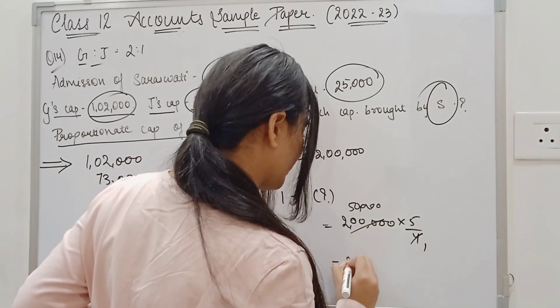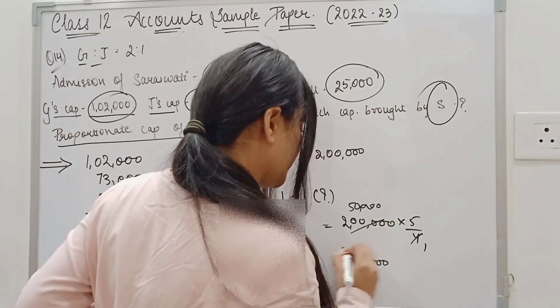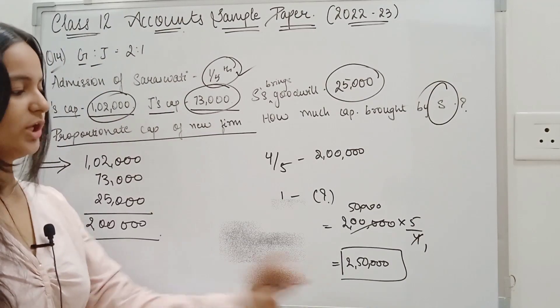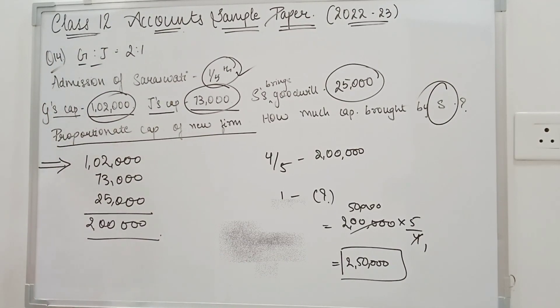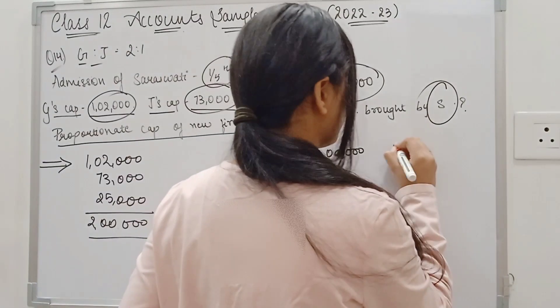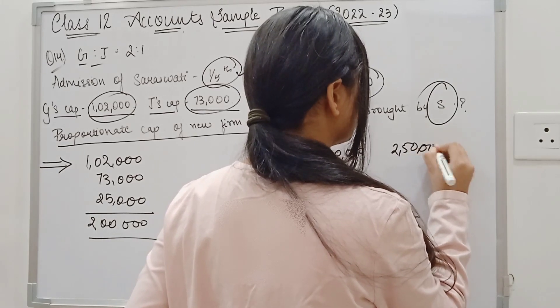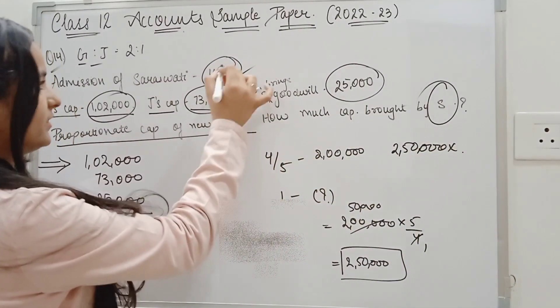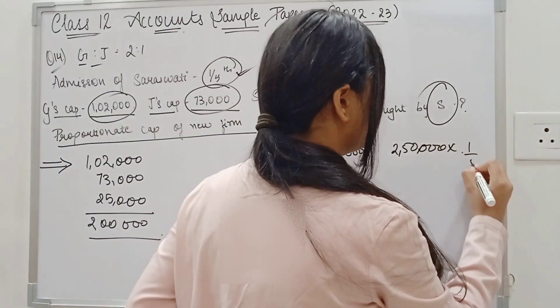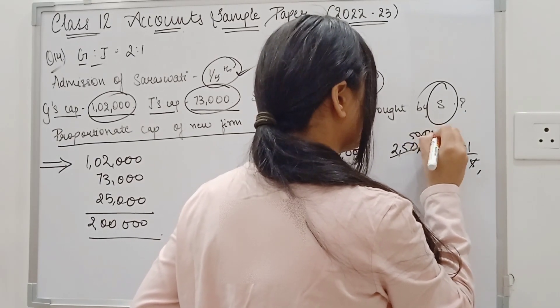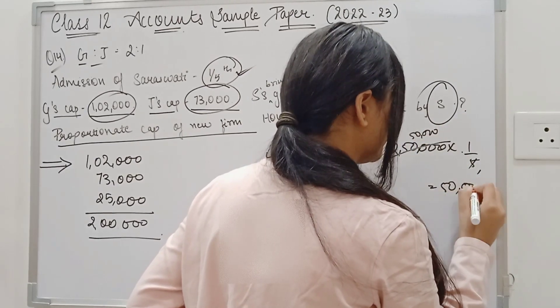50,000 into 5 will be 2 lakh 50,000. So the total capital is 2 lakh 50,000. The share is the 1/5th. So 2 lakh 50,000 into 1 by 5 will be 50,000. So how much capital will Saraswati bring? 50,000.